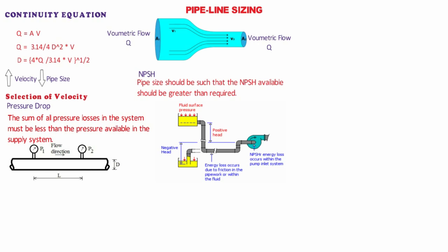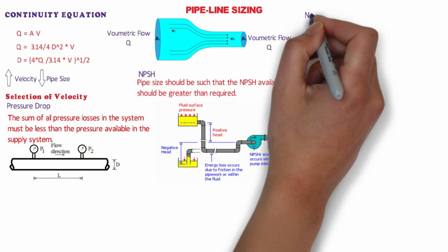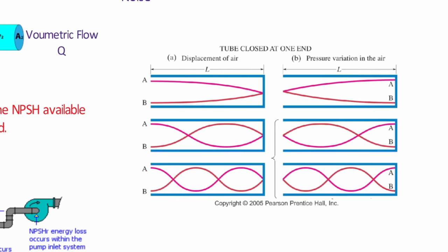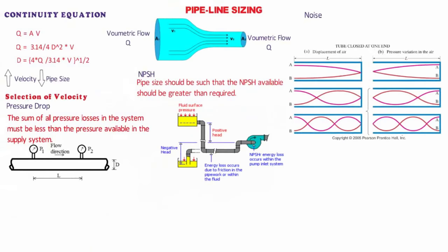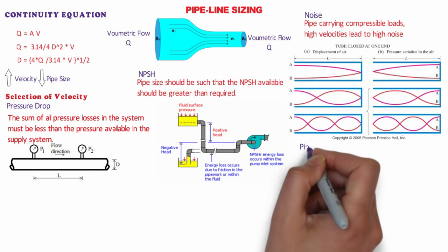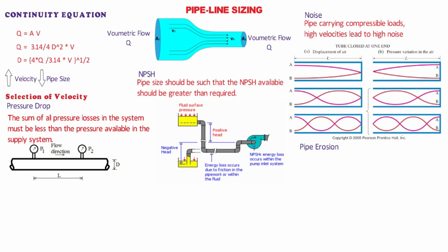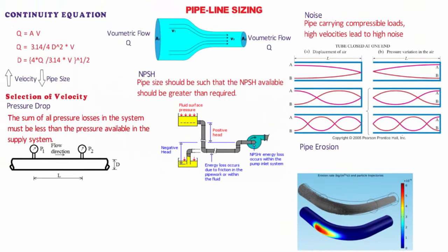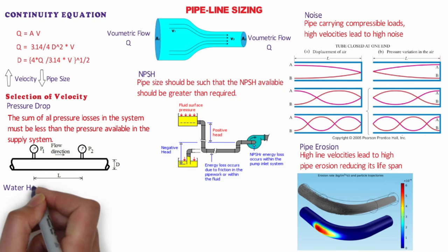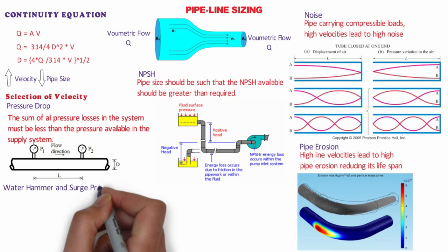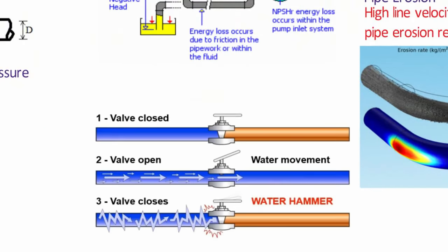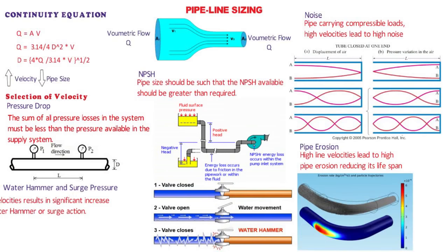I will provide the link in the description box below. Other factors include noise — in case of pipes carrying compressible fluids, high velocities lead to high noise — pipe erosion: high line velocities lead to high pipe erosion, reducing its lifespan; and water hammer and surge pressures: high line velocities result in significant pressure increases due to water hammer or surge action. Out of these factors, I cannot emphasize enough on the importance of pressure drop while deciding the optimum line size for any service.